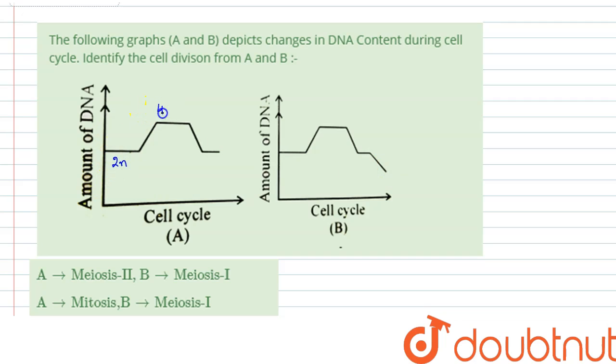Whereas here if the amount was 2n it became 4n, then again 2n, then here it went to n. Now looking at this diagram I can say that this diagram shows mitotic division.